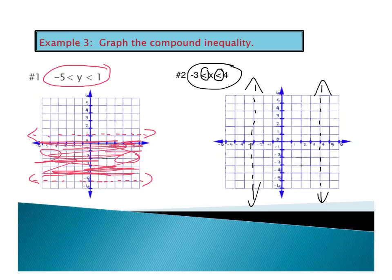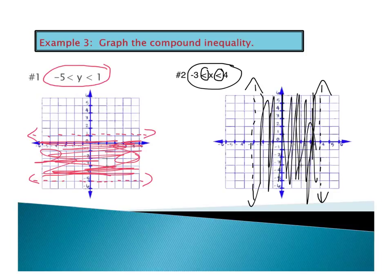Here I'm greater than negative 3, so I'm going to be on this side of the line. For the 4, I'm less than 4, so I'm on this side of the line. I'm just shading in between the two vertical dashed lines.